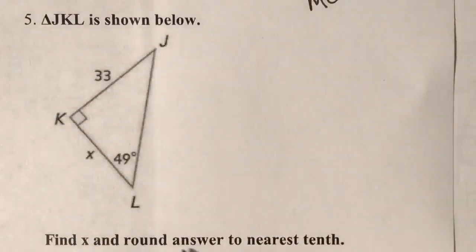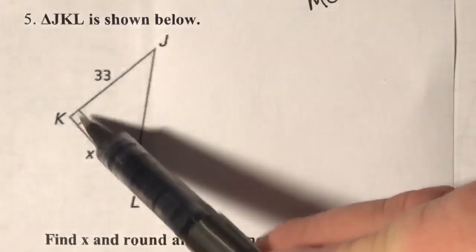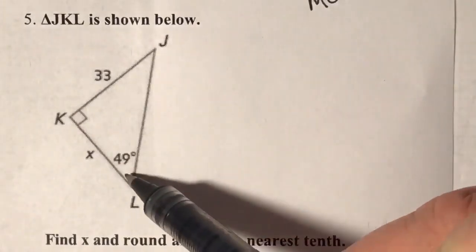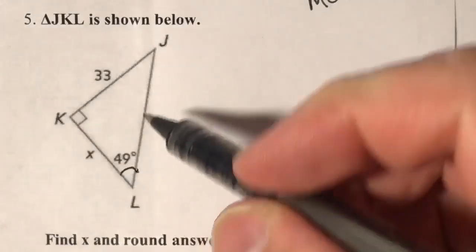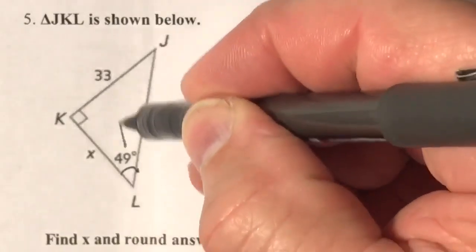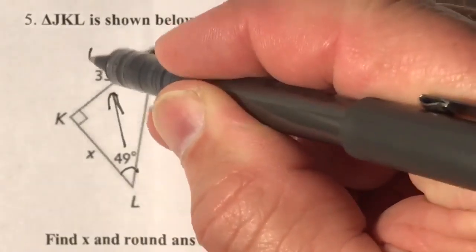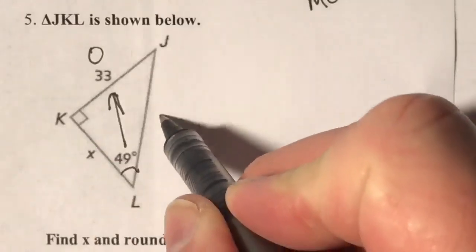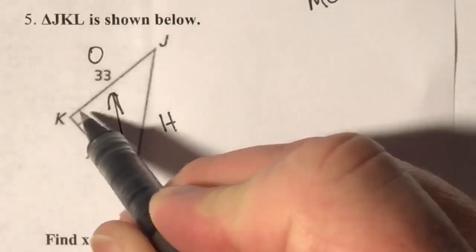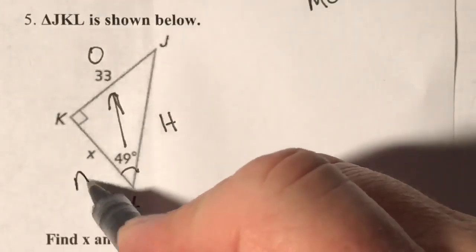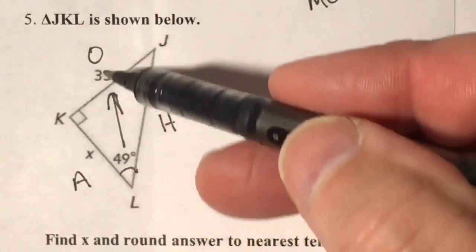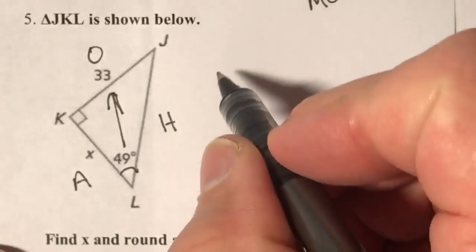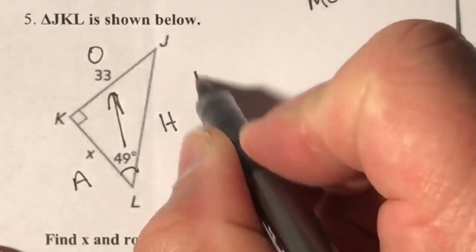The triangle is shown, find x, round the answer to the nearest tenth. We have an angle here, so we can do trig. Let this be O for the opposite, this is H across from the 90, and this is A. I'm going to use O and A, so that's immediately going to be tangent.